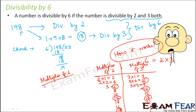Looking at the multiples of 6: 6, 12, 18, and so on — the common multiples of 2 and 3 are exactly the multiples of 6. So a number divisible by both 2 and 3 is a multiple of both 2 and 3, which means it is definitely a multiple of 6. That is the simple logic applied here.